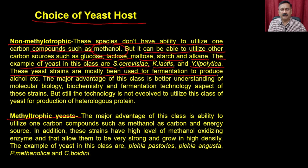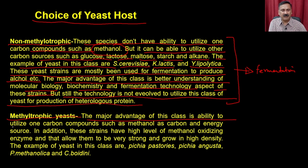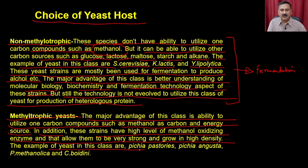These strains are mostly used for fermentation to produce alcohol. The major advantage of this class is a better understanding of molecular biology, biochemistry, and fermentation technology, but the technology has not evolved enough to utilize this class for production of heterologous proteins. The major advantage of the methylotrophic class is its ability to utilize one-carbon compounds such as methanol as energy sources. These strains have high levels of methanol-oxidizing enzyme, allowing them to grow to very high density. Examples are Pichia pastoris, Pichia augusta, Pichia methanolica, and C. boidinii.